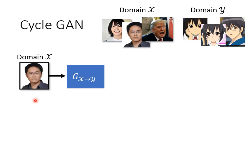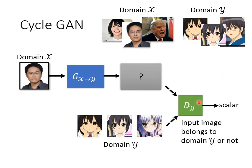Then how do we transform the output to the Y-domain distribution? We need a discriminator. Let the discriminator see a lot of Y-domain pictures so it can distinguish whether an image is a Y-domain picture. If it sees a Y-domain picture, it gives a high score; otherwise, a low score. But think about it — simply applying the original GAN training with just a generator and discriminator seems not enough. Why? Because what the current discriminator has to do is make the generator output a Y-domain picture, but the output doesn't have to be related to the input.